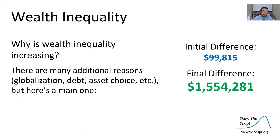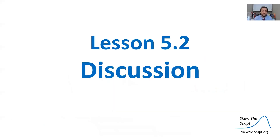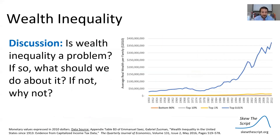Returning to our question of why wealth inequality is increasing: there are additional reasons — globalization, debt, asset choice — but here is a main one. Since wealth grows exponentially and exponential patterns increase spread, we've been seeing wealth inequality increase over time. Now for our discussion: looking at the chart dominated by the top 0.01%, all other growth pales in comparison. Discuss with your classmates: is wealth inequality a problem? If so, what should we do about it? And if not, why not? That's all for today on Skew the Script — see you next time.